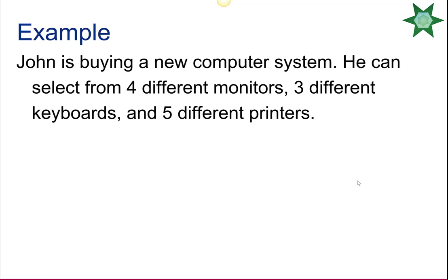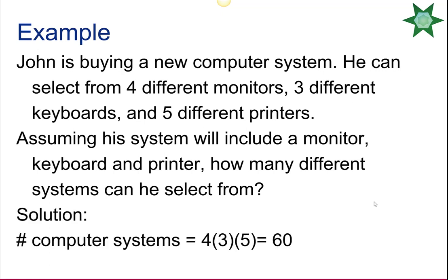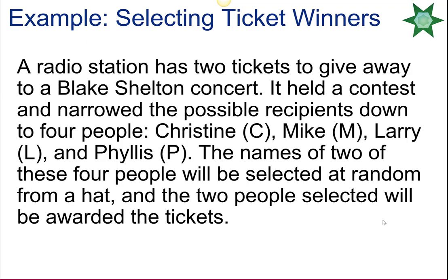John is buying a new computer system and can select from 4 different monitors, 3 different keyboards, and 5 different printers. Assuming his system includes one of each, the total number of different systems he can choose is 4 × 3 × 5 = 60.